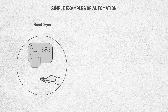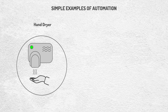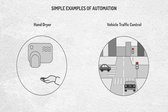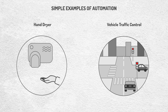Some very simple and everyday examples of automation include, for instance, hand dryers in the restrooms of a shopping mall. There, we can see how just by placing our hands near the dryer, it activates automatically. Another example is traffic lights, since they turn on and synchronize automatically to control vehicle and pedestrian traffic.